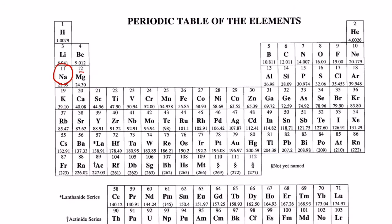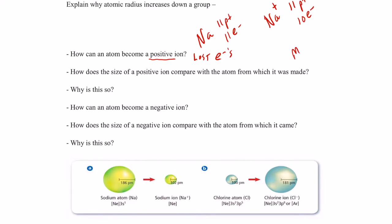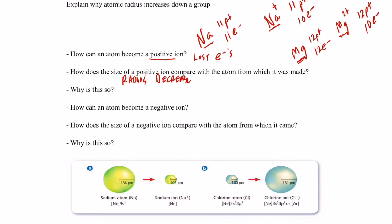Let's look at magnesium. Magnesium is atomic number 12, so it has 12 protons and 12 electrons. The magnesium ion is a very common ion - it's 2+. It still has 12 protons, and if it's 2+, it has 10 electrons - it lost two electrons. Now, what happens to the size of an atom when it becomes a positive ion? The atomic or ionic radius decreases - it gets smaller.